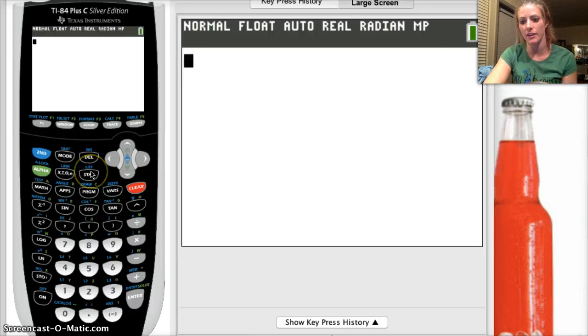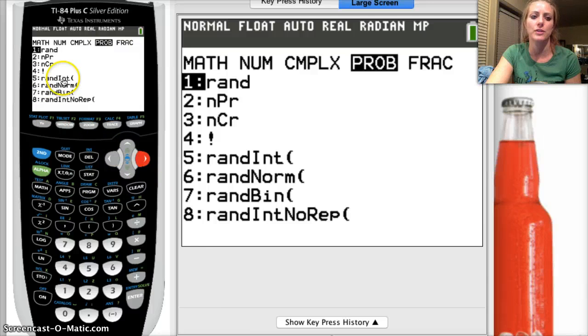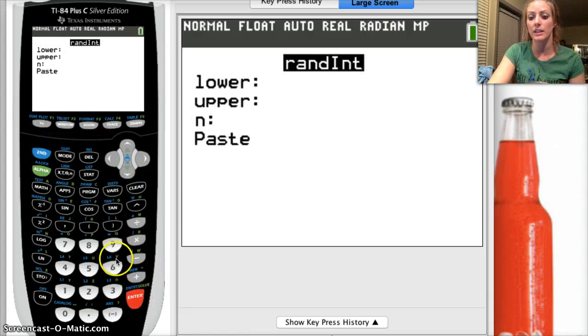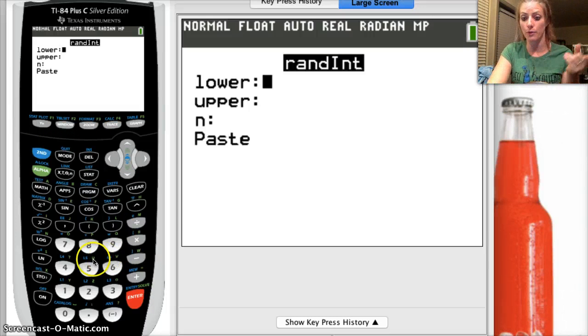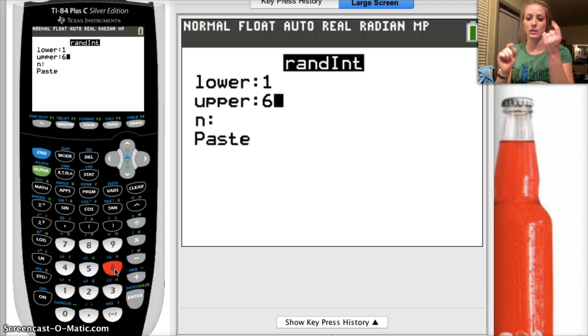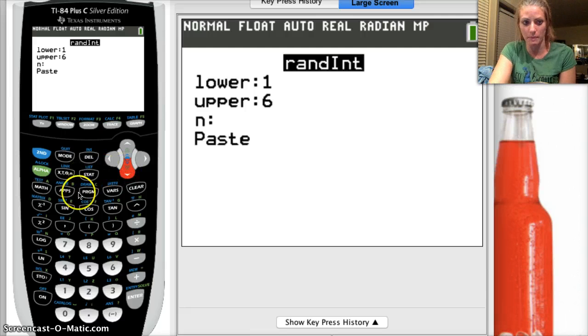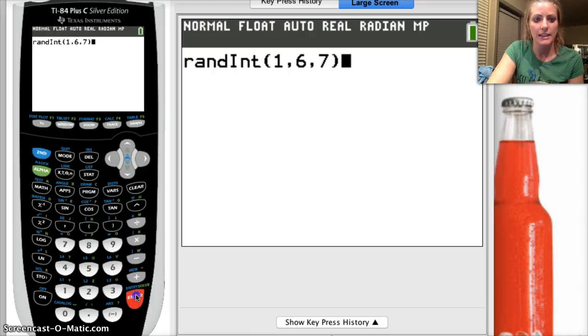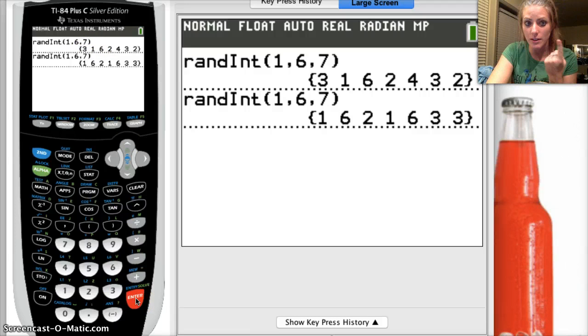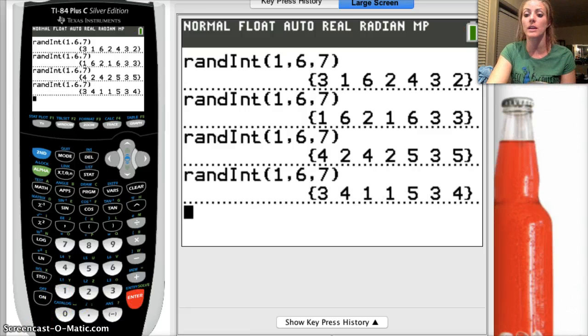I want to do this again and again and again, so I'm going to go to the calculator and have it run more simulations for me. I want to go to math and then go over to probability. Number five is randint, which means a random integer. You can just click five and hit enter. Then you need to tell it your lower bound. What is the lowest number you want? I'm going one through six, pretend I'm rolling a die. My lower bound is one, my upper bound is six. It will use all the integers between one and six, which are all the numbers that are on a die. And then how many numbers do I want to pick? I want to pick seven because there were seven friends. I hit paste and enter and I get a set of seven numbers. So I have one more win. I can hit enter again and get a new set of numbers. I get two wins, another set, no wins, two wins. I'm going to do this a bunch and then put it on the graph.